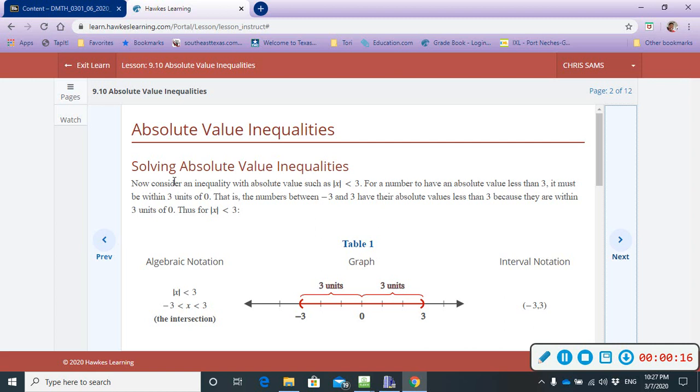When we're doing Absolute Value Inequalities, Absolute Value of x is less than 3. It says in order for this to be less than 3, it must be within 3 units of 0. So, that means it has to be between negative 3 and positive 3.